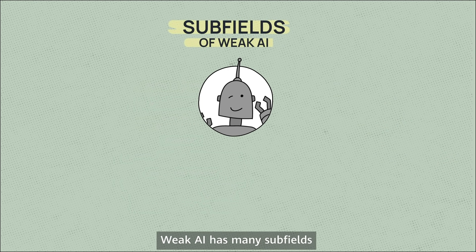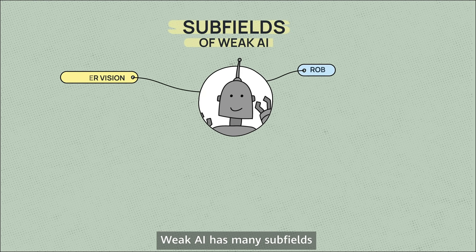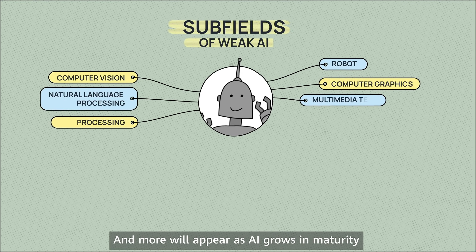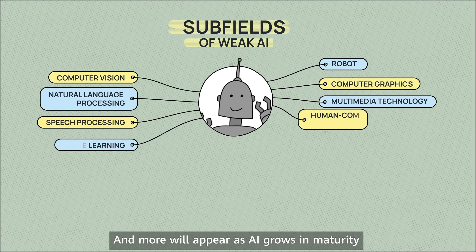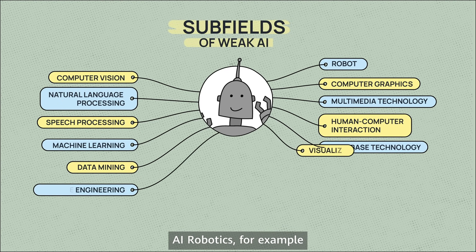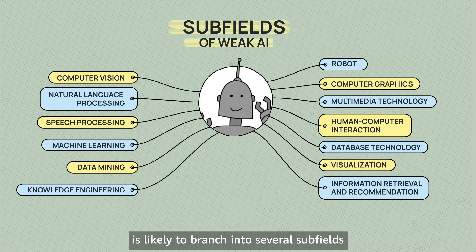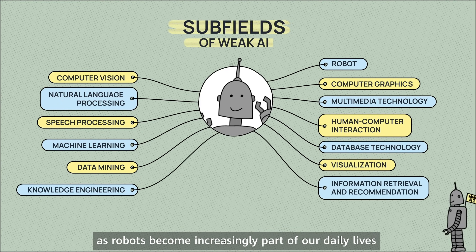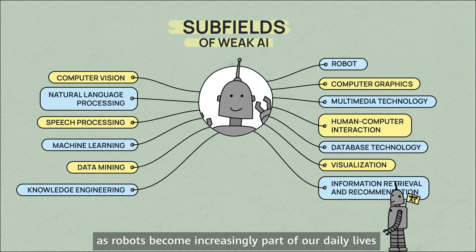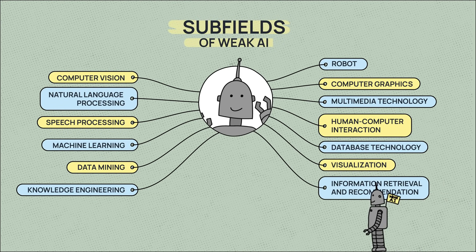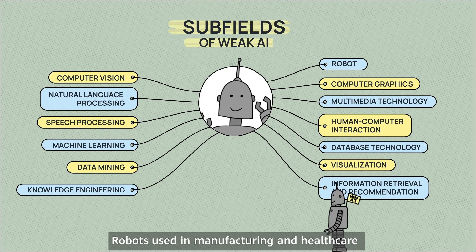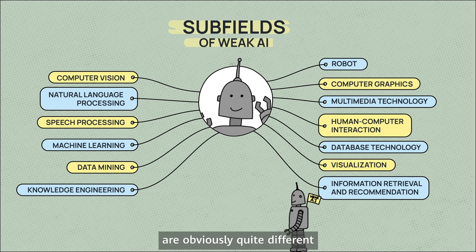Weak AI has many subfields, and more will appear as AI grows in maturity. AI robotics, for example, is likely to branch into several subfields, as robots become increasingly part of our daily lives. Robots used in manufacturing and healthcare are obviously quite different.